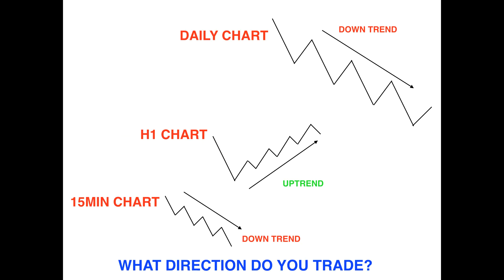So I have a question for you: what direction do you trade? If you look at the daily chart, we can clearly see it's a downtrend — lower highs, lower lows, lower highs and lower lows — with clear phase ones and phase twos. When you go down to the H1 one-hour chart, we can see an uptrend with higher lows and higher highs. When you go down to the 15-minute chart, we have a downtrend. So three timeframes, but they are all conflicted in what direction they are trading.